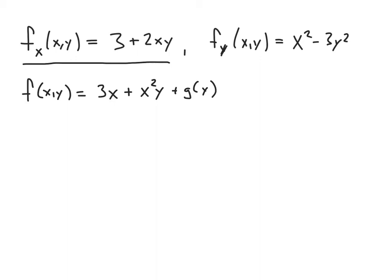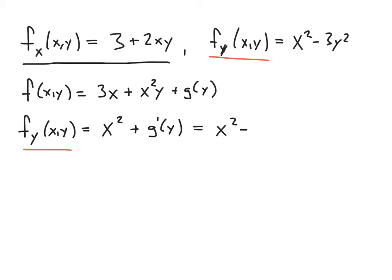Now I differentiate this function with respect to y to get F_y. The derivative of 3x is zero, the derivative of x²y is x², and the derivative of G(y) is G'(y). We now have two ways of writing F_y: x² + G'(y) from our expression, and x² - 3y² from our vector field. Setting these equal and subtracting x² from both sides, we conclude G'(y) = -3y². Therefore G(y) = -y³ + K for some constant K.